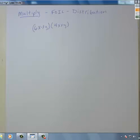So on this problem, we are multiplying two polynomials, which is the same thing as FOIL or distribution.